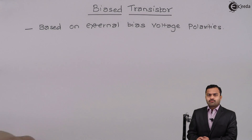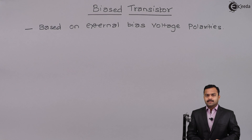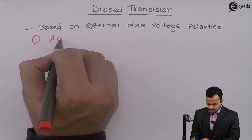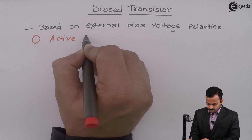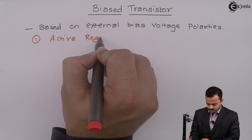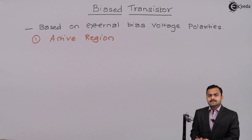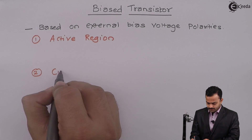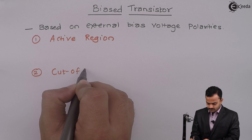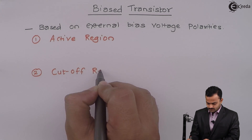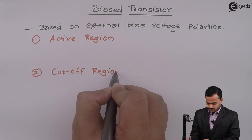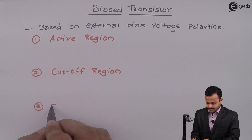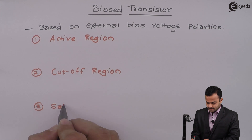The first region is Active, the second is Cut-off, and the third is Saturation region.